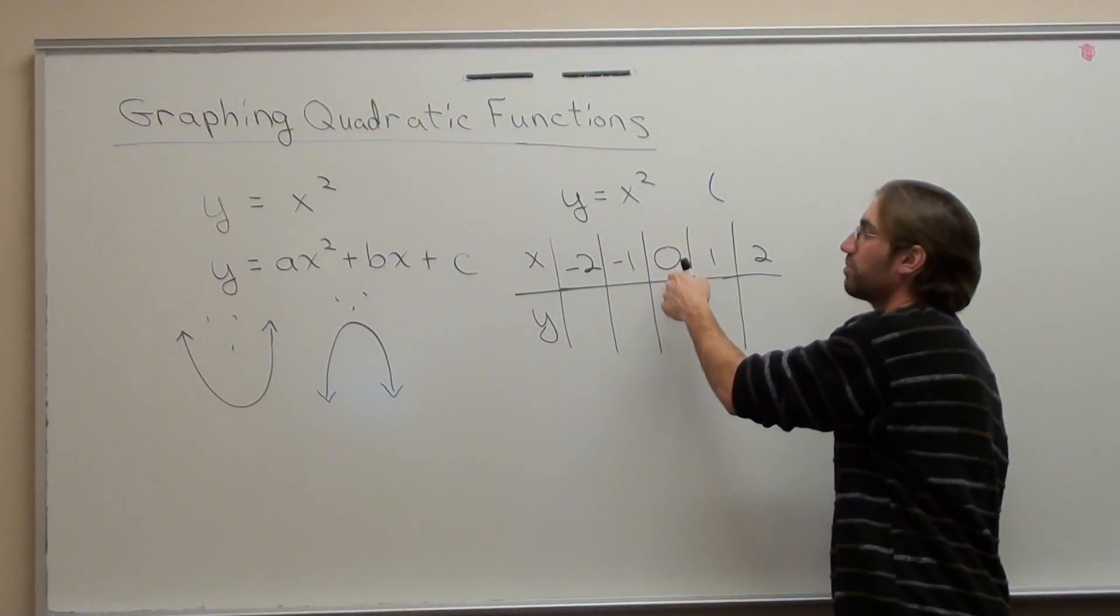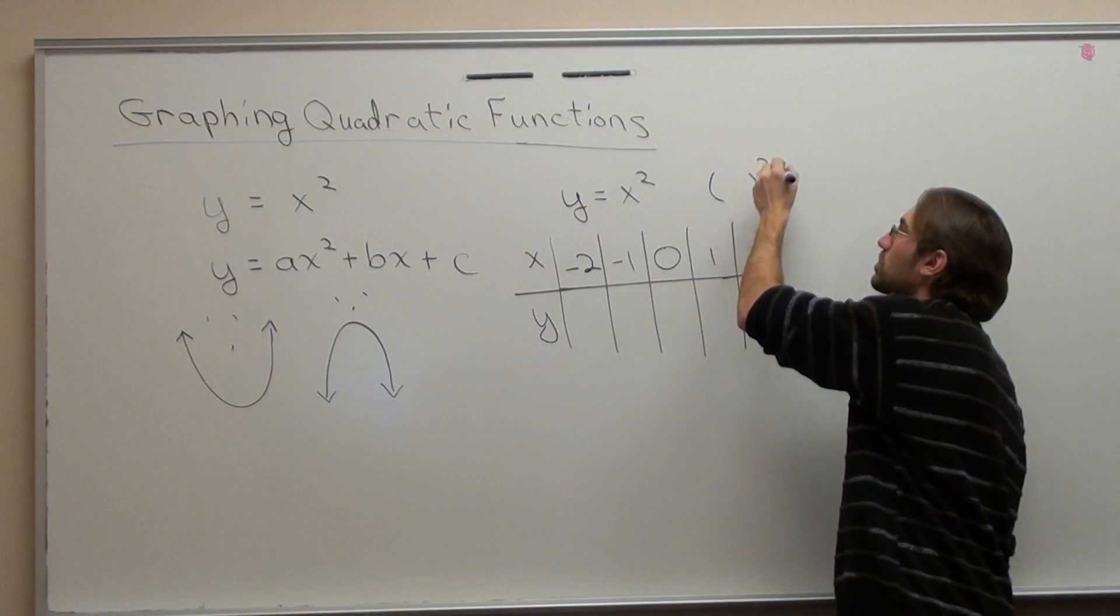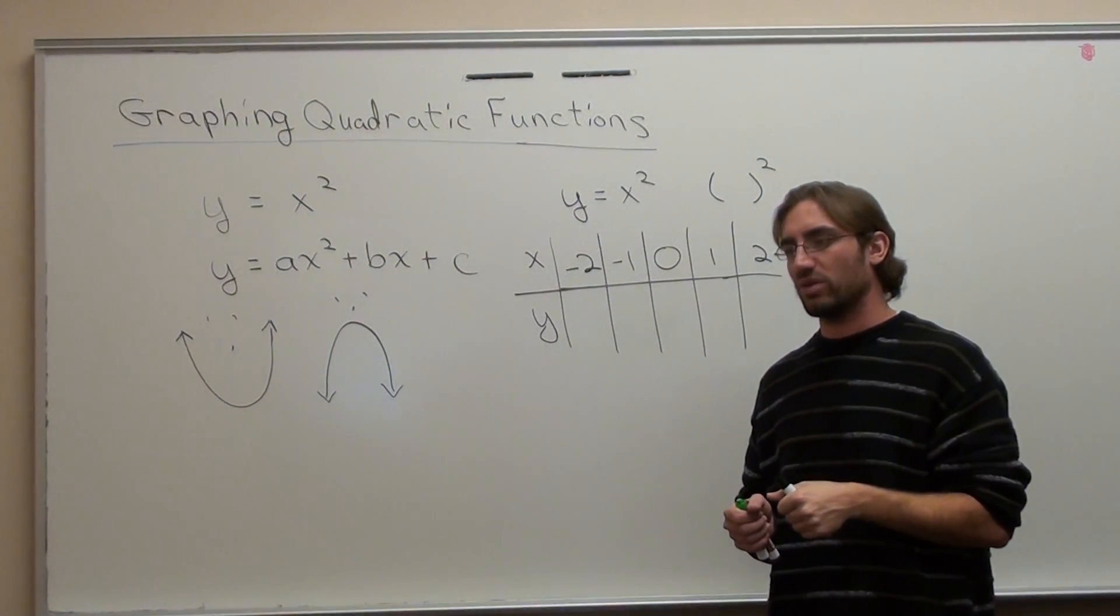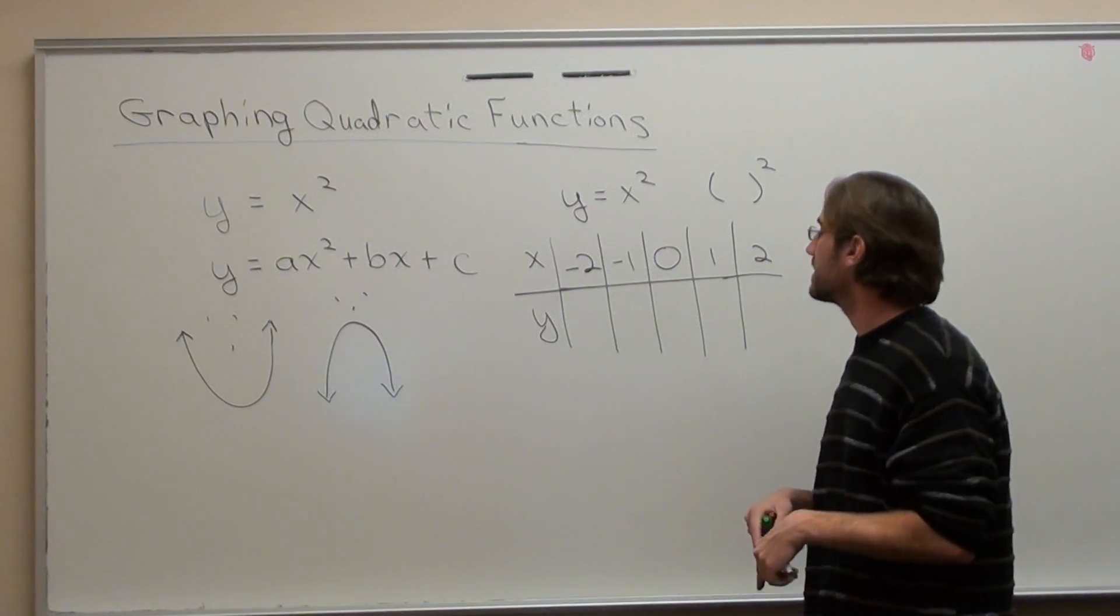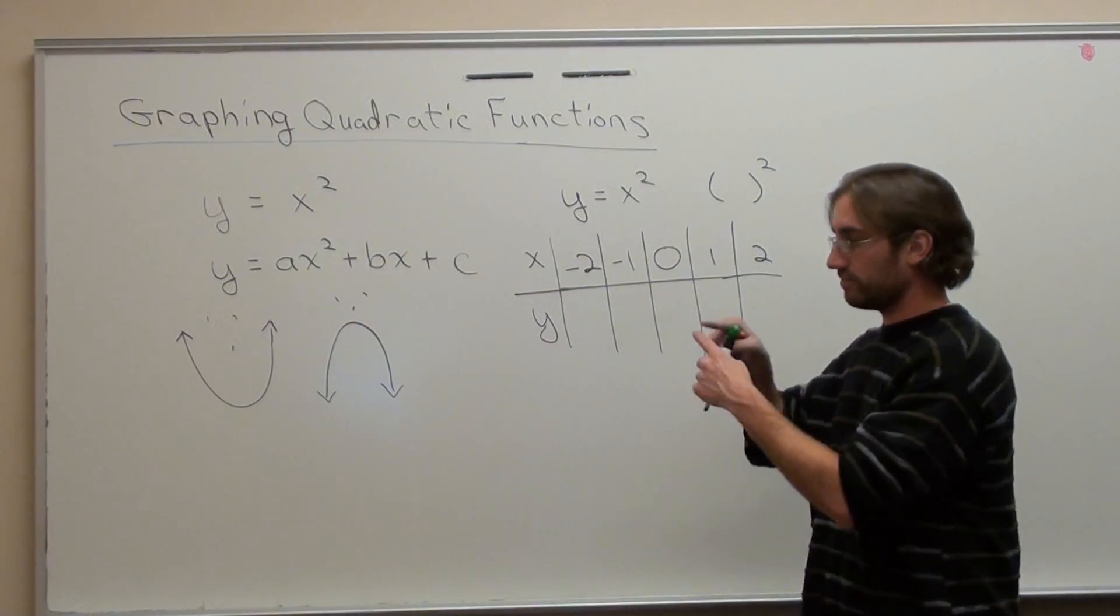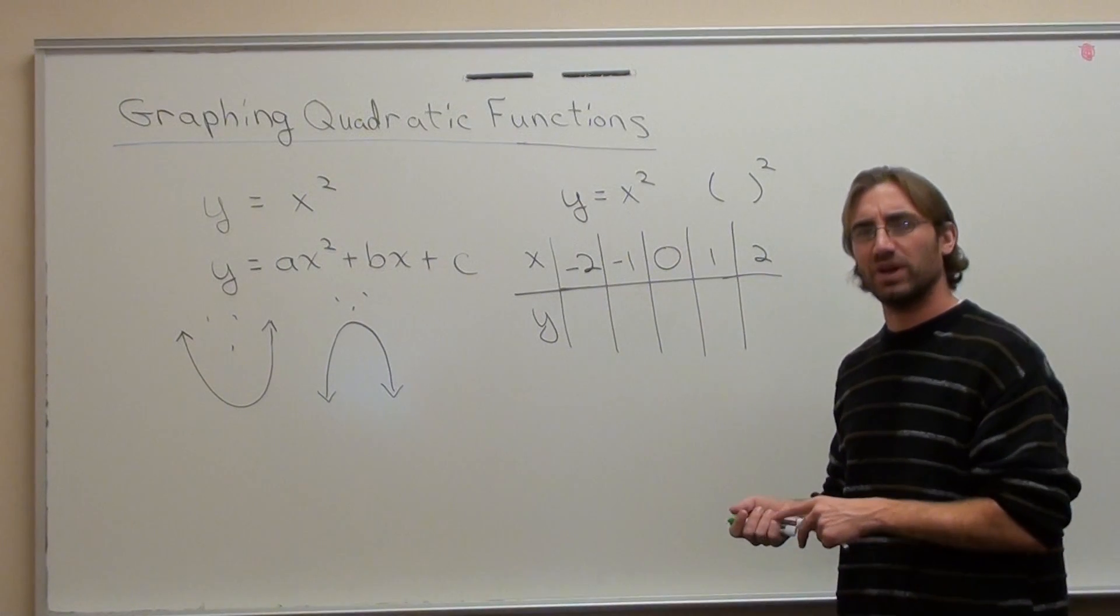Parenthesis, whatever you're putting in, close parenthesis, square. When you don't do that, your graph isn't going to look like a u. It's going to look like a straight line like this, and then students don't understand what they did wrong.